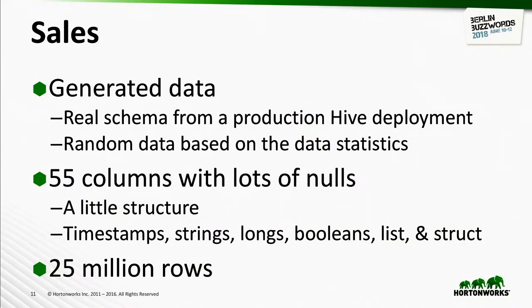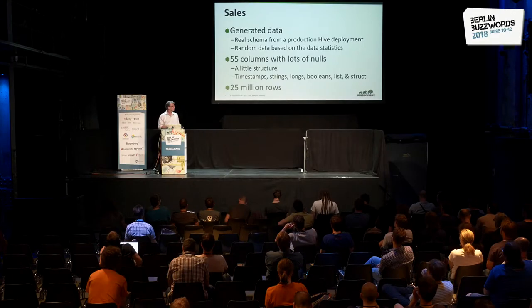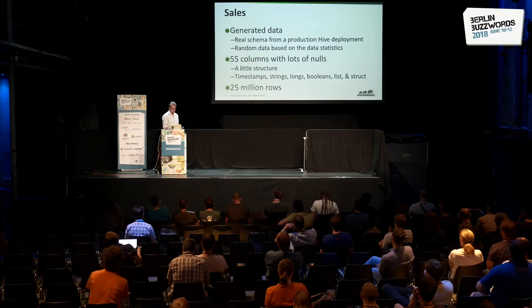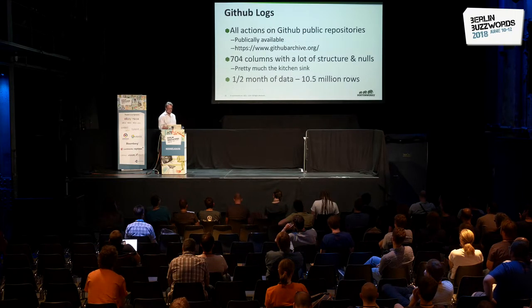The next dataset is unfortunately generated, but it's based on a real customer schema I've worked with a lot. There wasn't anything public that matched the same kind of sales data, so we used properties from their real data to generate the random data. It has a little bit of structures, mostly timestamps, strings, longs, and booleans. We picked 25 million rows to match the other datasets.